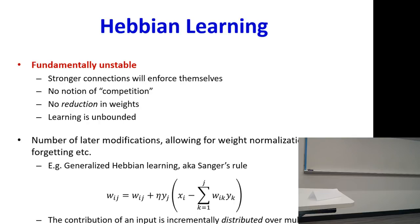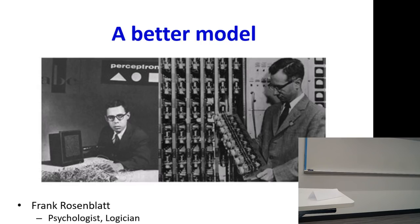People came up with all kinds of corrections like generalized Hebbian learning, also called Sanger's rule, where Sanger came up with the idea of modifying Hebbian learning to explain multiple outputs at the same time. Hebbian learning is used all over the place, but you have to make the fundamental modification that you're also allowed to decrease weights as opposed to only increase them.